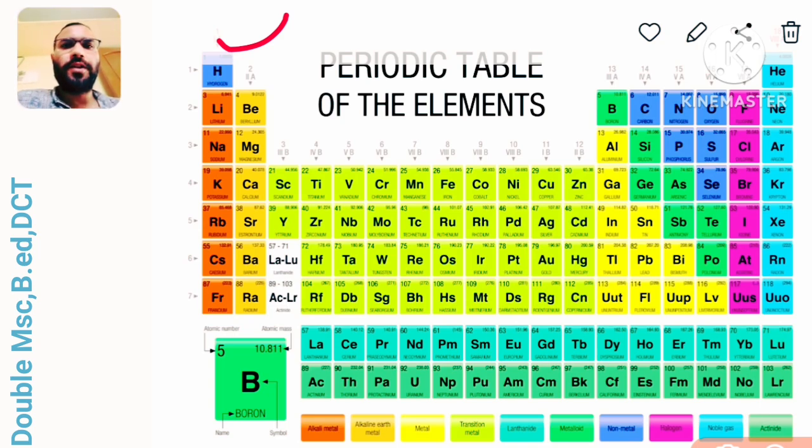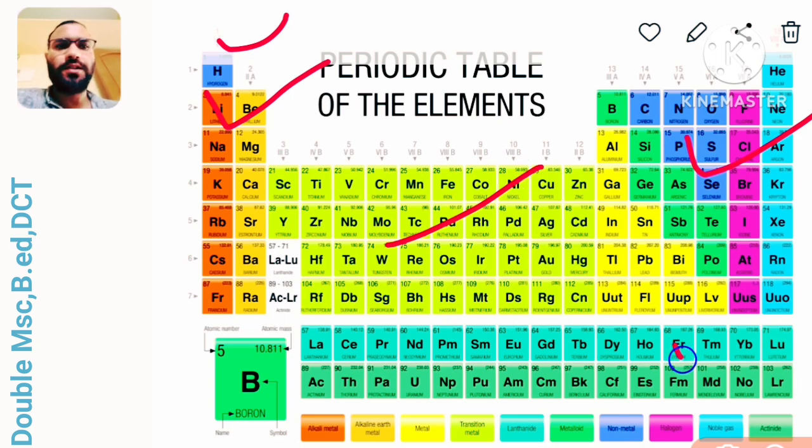In the periodic table there are 18 groups and 7 periods, and also there are four blocks: s block, p block, d block and f block. This is your s block, this is your p block, this is d block, and f block consists of two series - one is called lanthanide series and second is called actinide series.